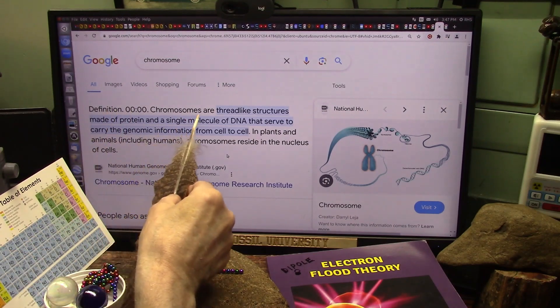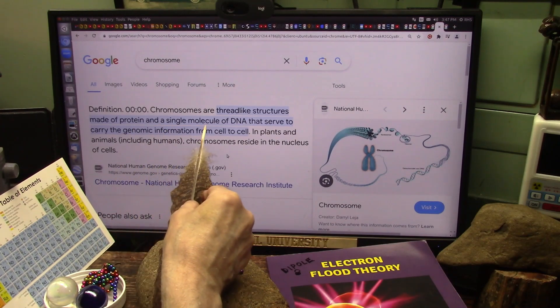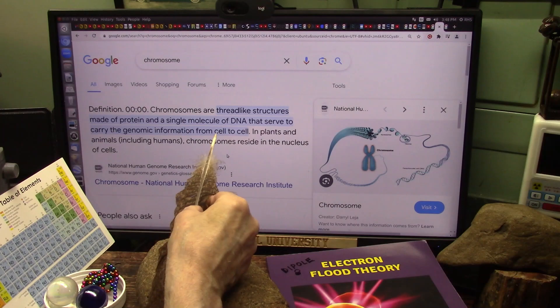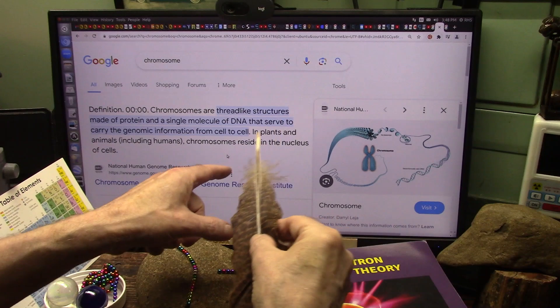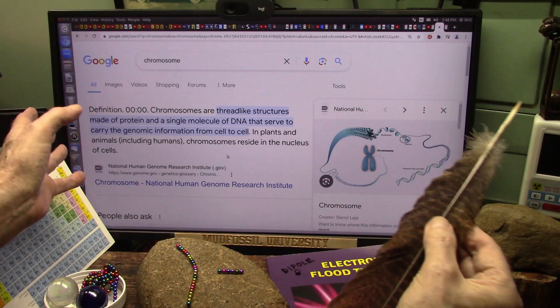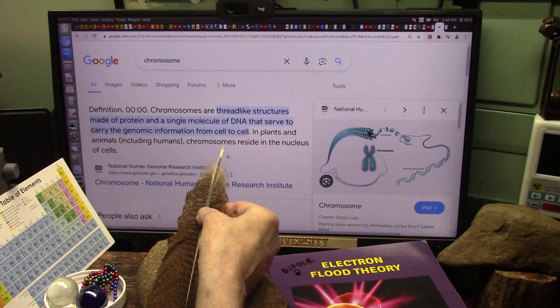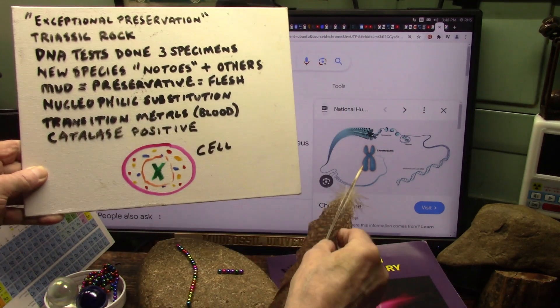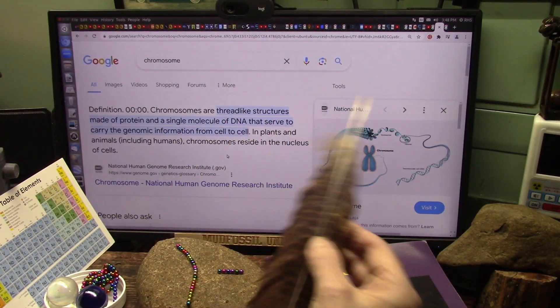You see this? Chromosomes are thread-like structures made of proteins and a single molecule of DNA that serve to carry the genomic information from cell to cell. Genome is nothing more than a program, and when you alter that program, somehow all the DNA in your body has to have that new program. In plants and animals, including humans, chromosomes reside in the nucleus of the cells, just like I was showing. It's this kind of thing right here, right inside the nucleus, the center of the cell. And every cell has basically the same chromosomes.